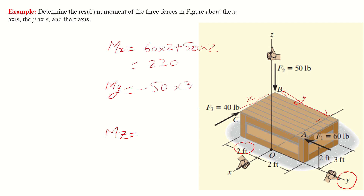Next, F3 is directed along the x-axis and has a perpendicular z-distance equal to 2. It also rotates in the clockwise direction, so its contribution is negative 40 multiplied by 2. The total moment about the y-axis is therefore equal to minus 230.